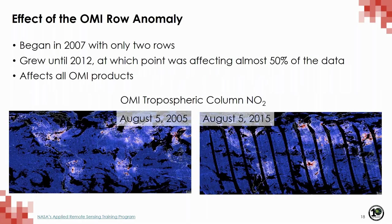The OMI row anomaly is the result of a hardware issue on the satellite — there's literally something in the way blocking the view. It started in about 2007 and grew until 2012, at which point it was affecting almost 50% of the data, but since 2012 it hasn't grown. You can see the effects of the row anomaly comparing the pre-anomaly picture from August 2005 to the picture from 2015.